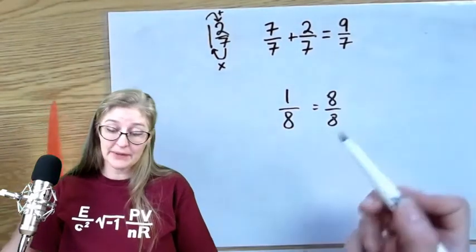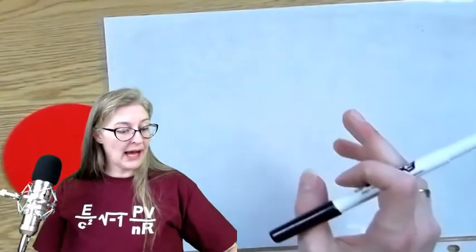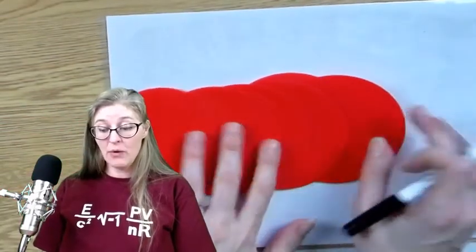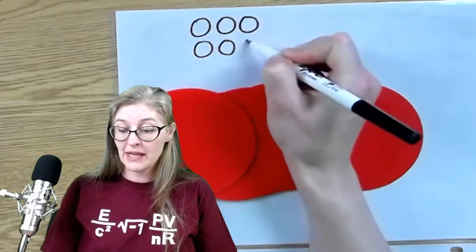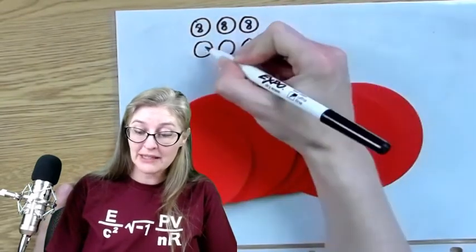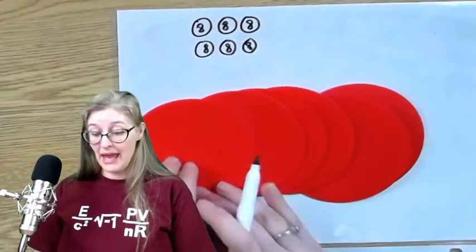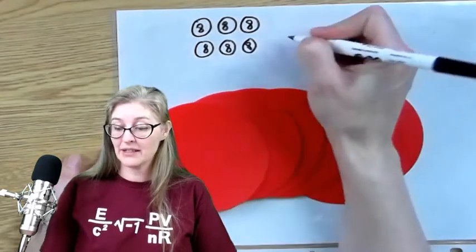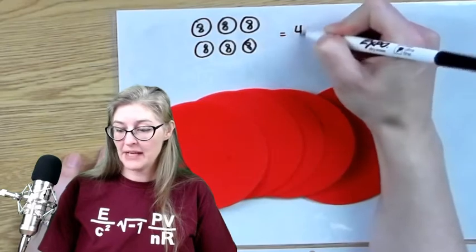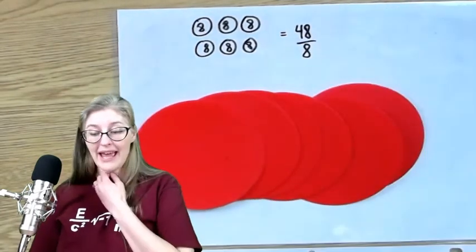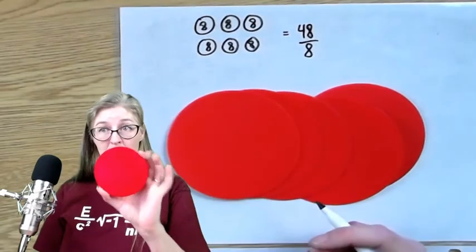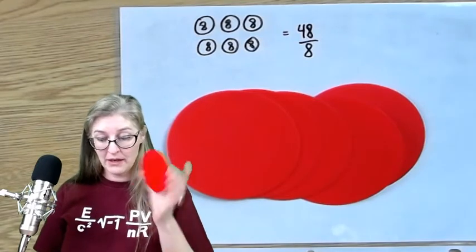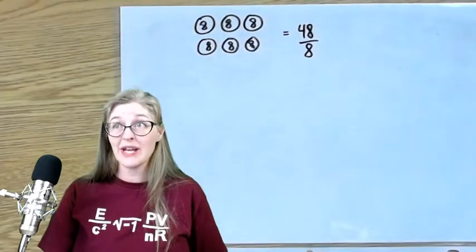One times eight is pretty easy — it's just eight. But let's say I have six wholes and I want to know how many eighths I can get. Each one of them is going to give me eight pieces. It's multiplication: six times eight equals 48. Forty-eight eighths. If I multiply out where I get eight for each one whole, I'm going to end up with a total of 48 eighths.